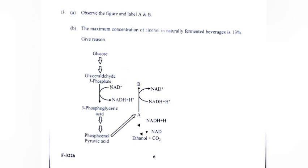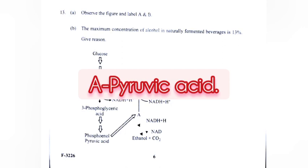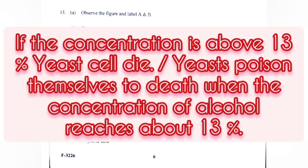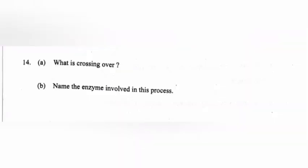A) Observe the figure and label A and B. Answer: A — pyruvic acid, B — lactic acid. B) The maximum concentration of alcohol in naturally fermented beverages is 13%. Give reason. Answer: if the concentration is above 13%, yeast cells die — yeast poison themselves when the concentration of alcohol reaches about 13%.